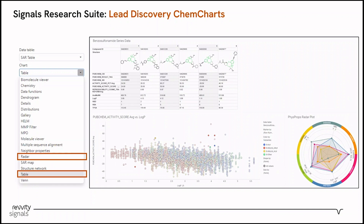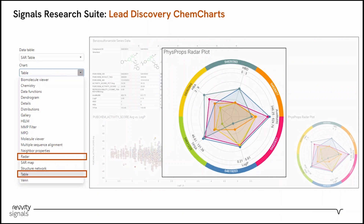This view combines a chem charts table with a standard scatter plot and a chem charts radar plot. And what's nice is these all interact with each other. Here I've highlighted a few compounds — they show up in the table as well as in the radar plot, where just like with the MPO, I got to choose which properties form each axis of this web-like plot. And then each of the compounds I selected is overlaid in a different color, so we can easily compare across our data set.